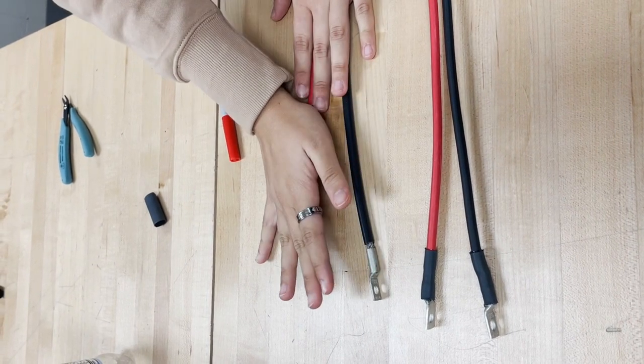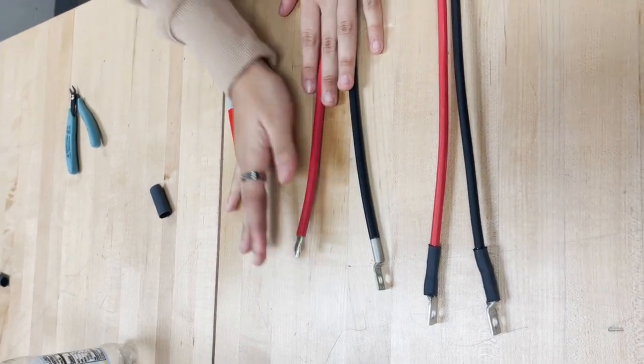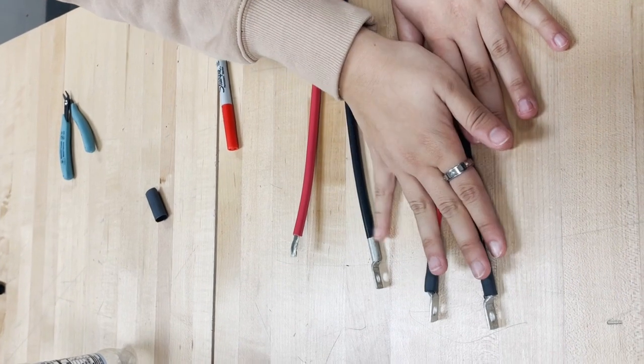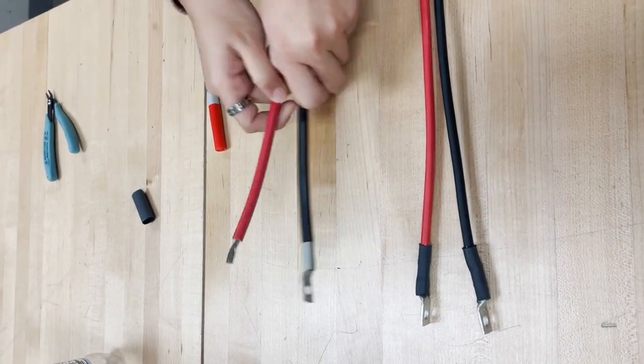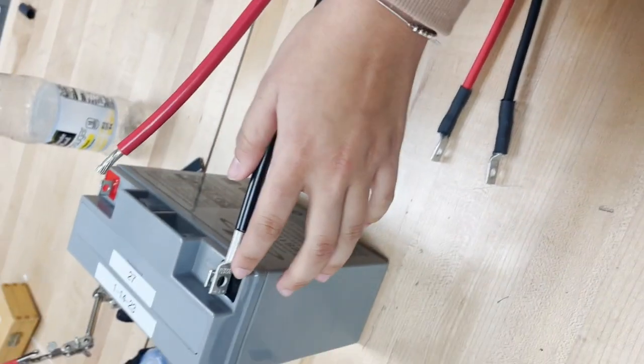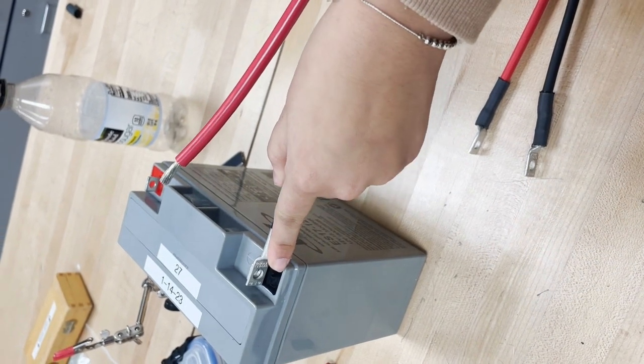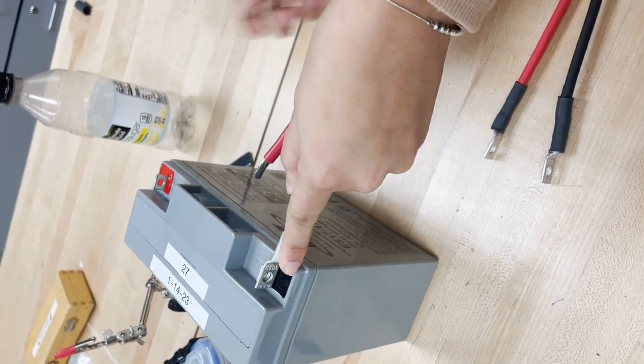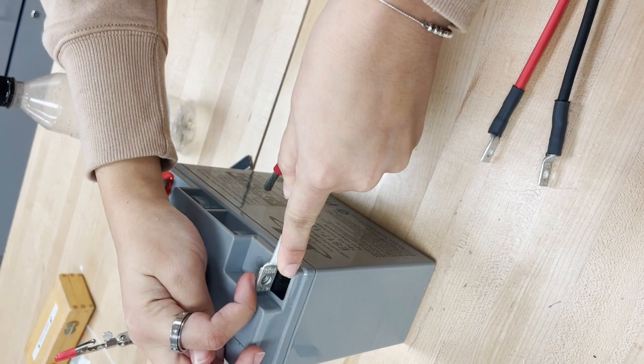Now you don't want to just put on the terminal all willy-nilly. What you want to do is make sure it lines up with this example, which then lines up with the battery. The terminal will go on the outside of the battery terminal and the screw will be inserted from the left.